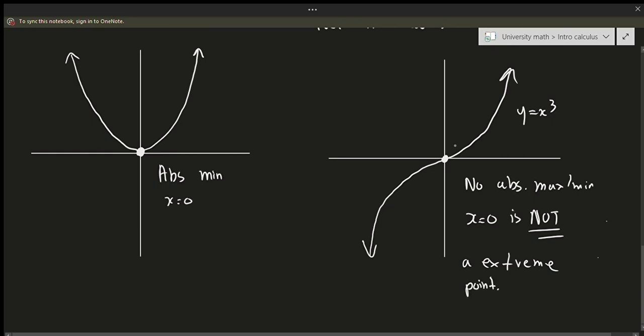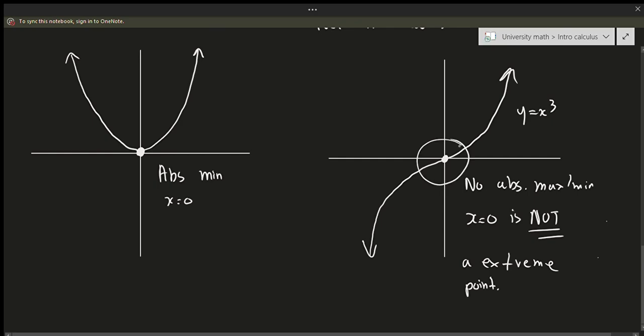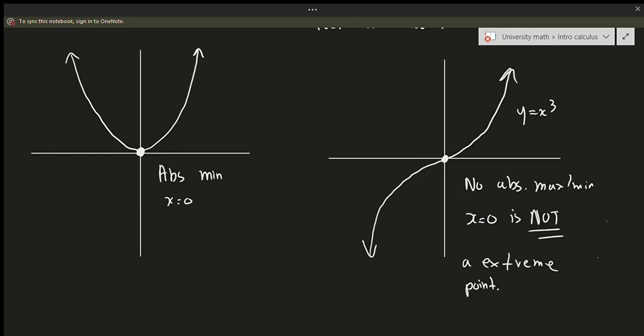Just because something kind of looks like an extremum for a certain graph does not mean it is necessarily the absolute maximum or minimum. If I look at an interval around x equals 0 on y equals x cubed, the graph keeps going down on the left side, so it can't be a minimum, and keeps going up on the right side, so it can't be a maximum. So there is no absolute max or min — x equals 0 is not an extremum.